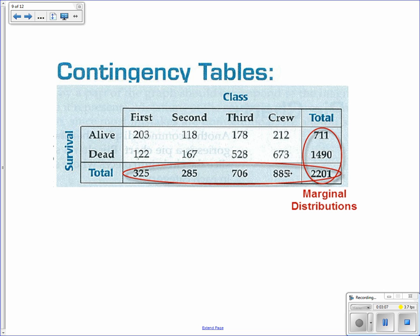Along the edges are the totals. And these are marginal distributions. And I like that word because I think of margins of paper or on the edges. So you have the totals along the margins. And these show you the marginal distributions.